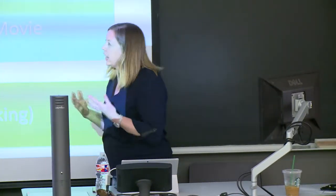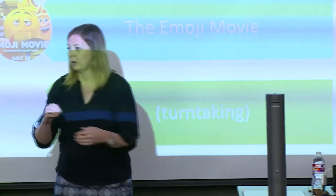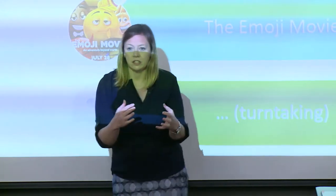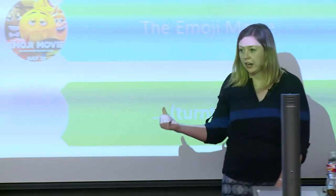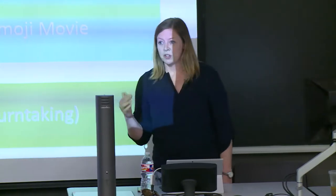Thornbury and Smith really accurately point out that the internet has qualitatively transformed everyday communication and actually constitutes a multiplicity of language contact zones, really unprecedented in human history. On top of that, I would add we have access to them. Unlike language contact zones where we fly to borders and collect field data, we can look at tons and tons of data really quickly. I hope I've pulled some examples you're familiar with, and some that you're probably like, what the heck is she talking about — and that's exactly the point.